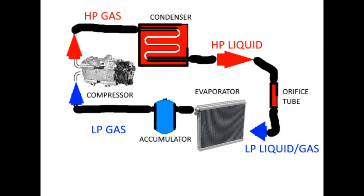We're going to be using this picture quite often in this video because it explains your entire AC system. Looking at it, it seems pretty simple — and that's because your AC system is pretty simple. There are really only five components on your AC system, and that goes for pretty much all manufacturers.